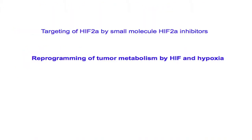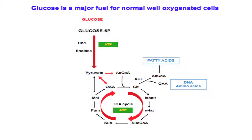Moving to the second target — this is one way we think it's possible to directly target HIF. The second target became clear to us when we started studying the effects of hypoxia and HIF on metabolism. There is a dramatic reprogramming of tumor metabolism by HIF.